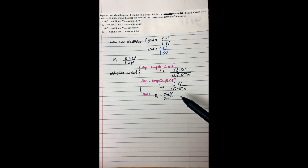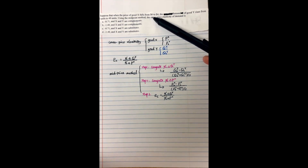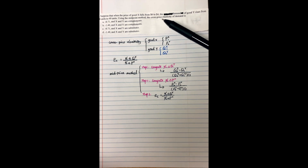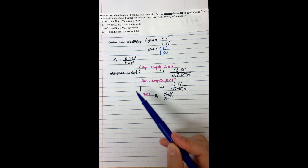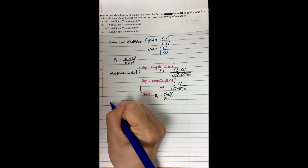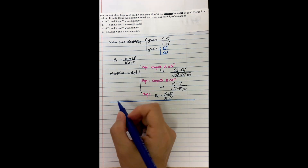Now, can we solve this question? The question tells you: the price of good X decreased from $6 to $4, and the demand of good Y increases from 30 units to 40 units. Use the midpoint method to compute the cross-price elasticity of demand. Based on the given information and what we just talked about, we can solve this question using those three steps.